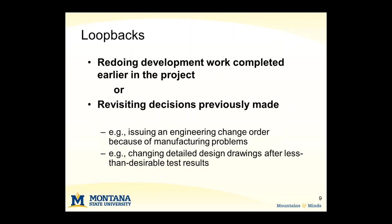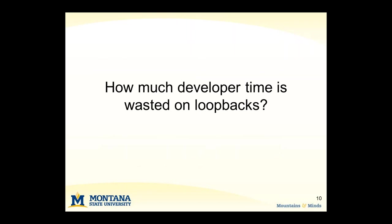One of the things that oftentimes underlies these vicious cycles are what we call loopbacks. A loopback is any time that we are redoing development work that's been completed earlier in the project. That usually means we're revisiting a decision that was made in light of additional information that has come to the attention of the team. There does seem to be quite a bit of developer time spent on loopbacks — some companies estimate 30–40%, and others as much as three quarters of development time.